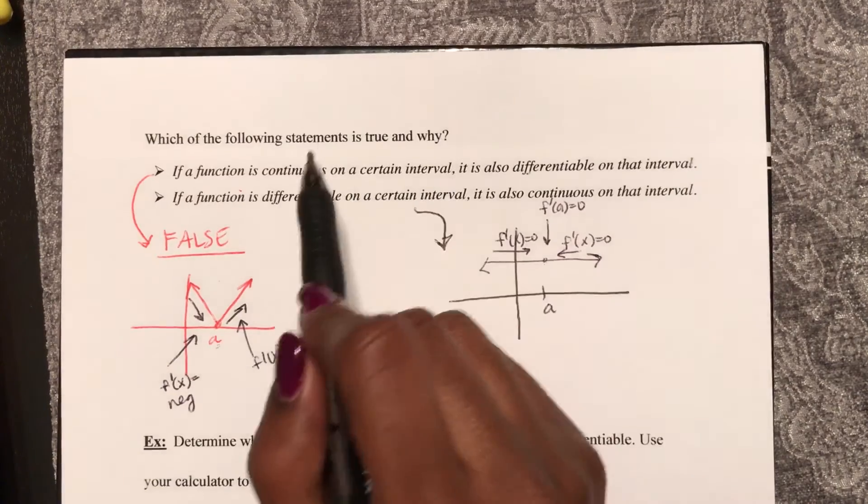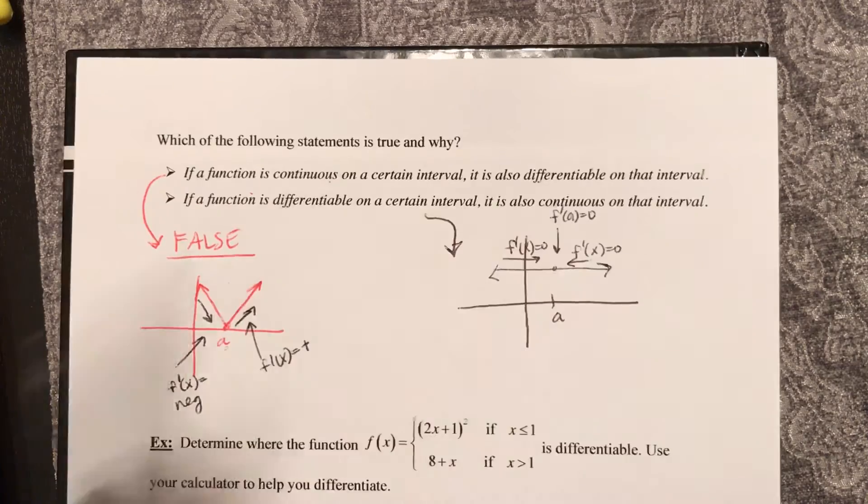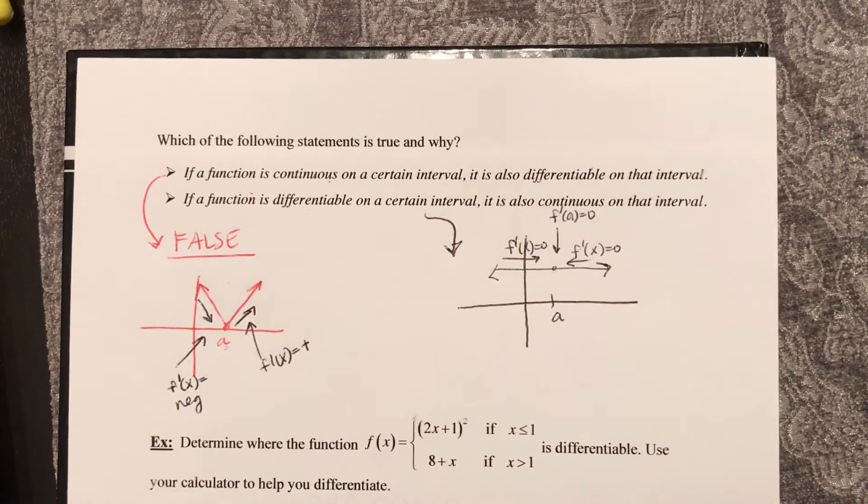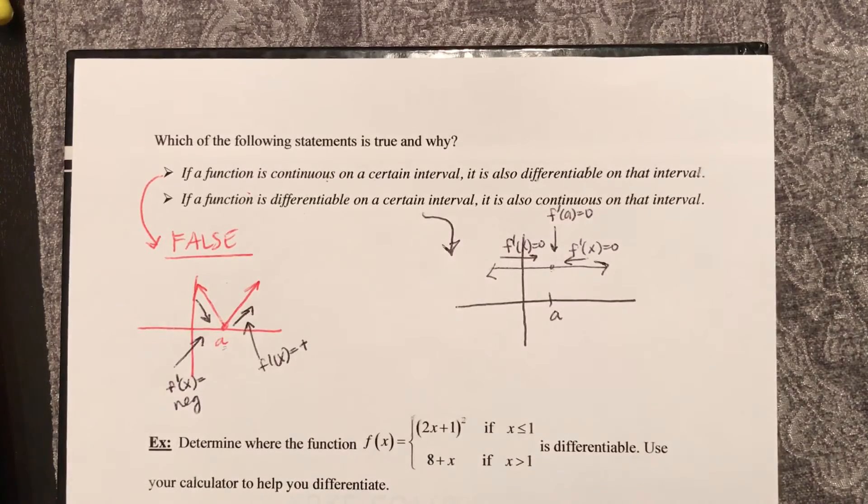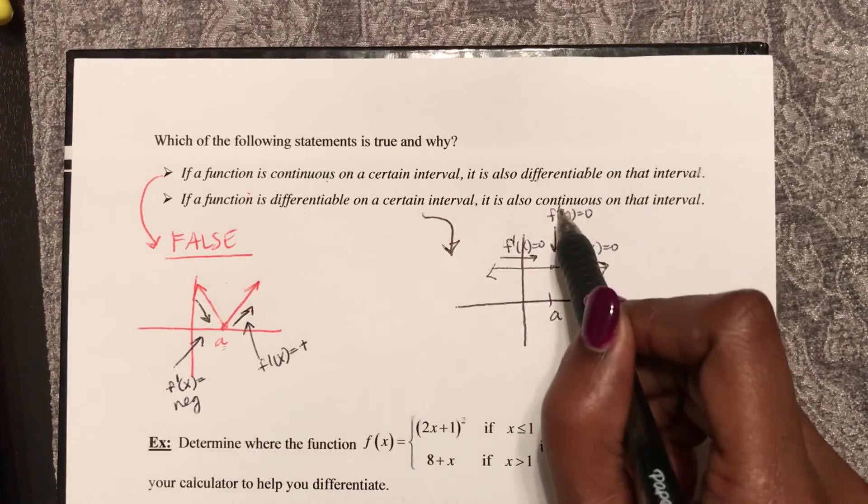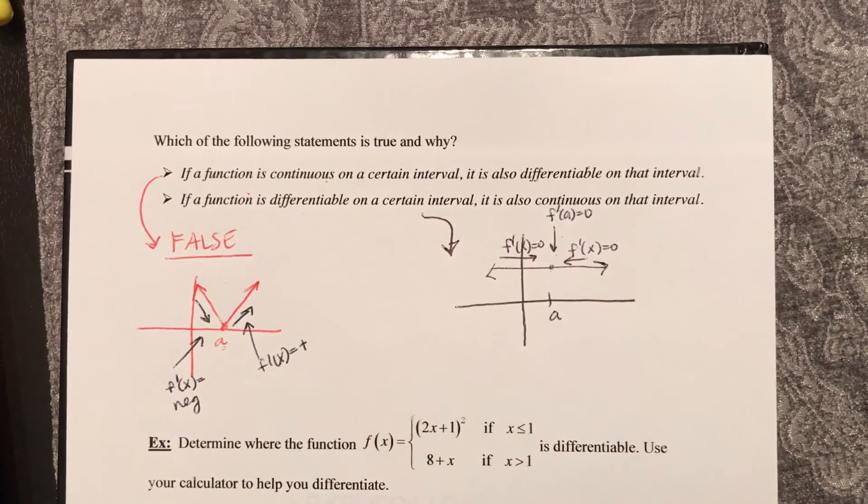So if it's continuous, it is not differentiable. But if it is differentiable, then it has to be continuous at that point because the derivatives on both sides exist. So the limit exists and the function at that point has to equal those limits.